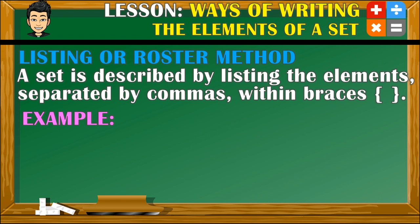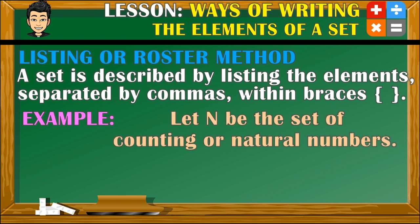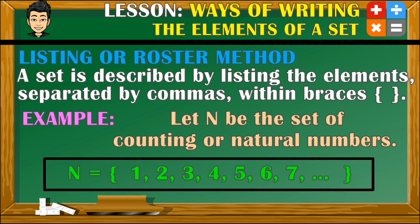For the last example, let N be the set of counting or natural numbers. As you all know, natural numbers always start with 1. So to represent this set, we write it down like this. If you notice, we use an ellipsis after listing down some elements because the given set is an example of an infinite set, which was already discussed from our previous video.